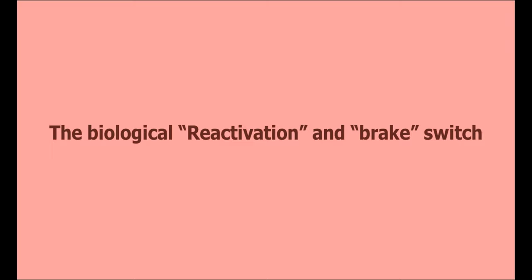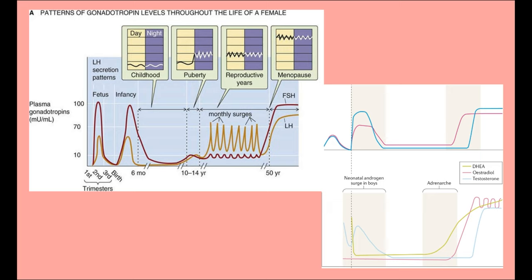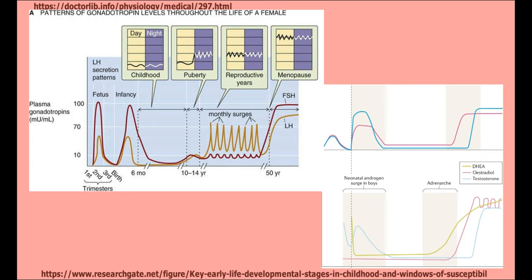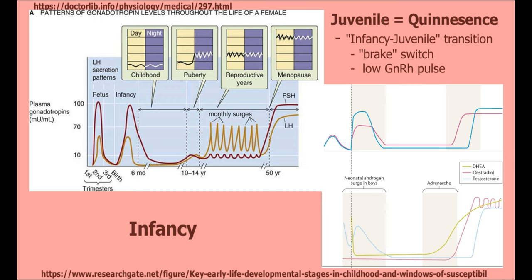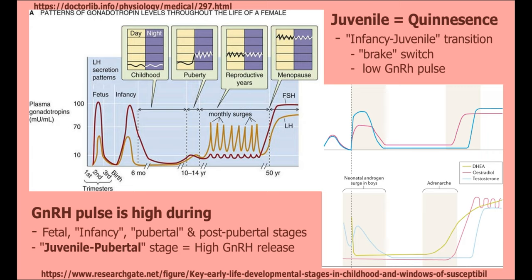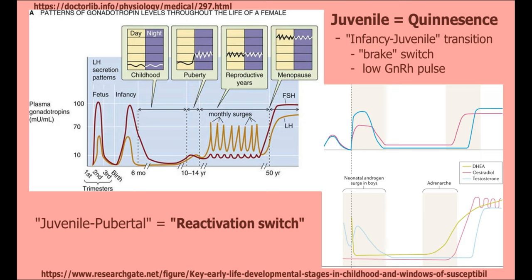Studies detecting and monitoring GnRH pulse generation in children and rhesus monkeys have reached a consensus that leading up to puberty there are two other life stages: infancy, which includes fetal and neonatal periods, followed by the juvenile stage, which is the transient period right before puberty. The reactivation switch occurs during the juvenile-pubertal transition, when GnRH pulsatility increases from less than one pulse every seven hours to approximately four pulses every seven hours over a period of six weeks. Prior to this, the brake switch occurs during the infantile-to-juvenile stage, when GnRH pulsatility is inhibited or restrained.